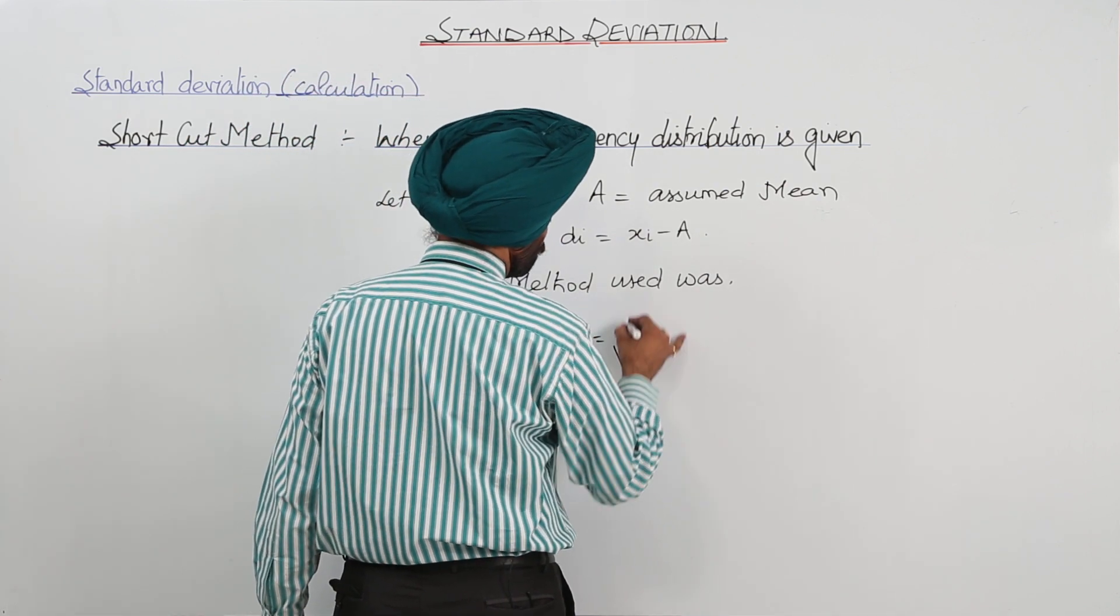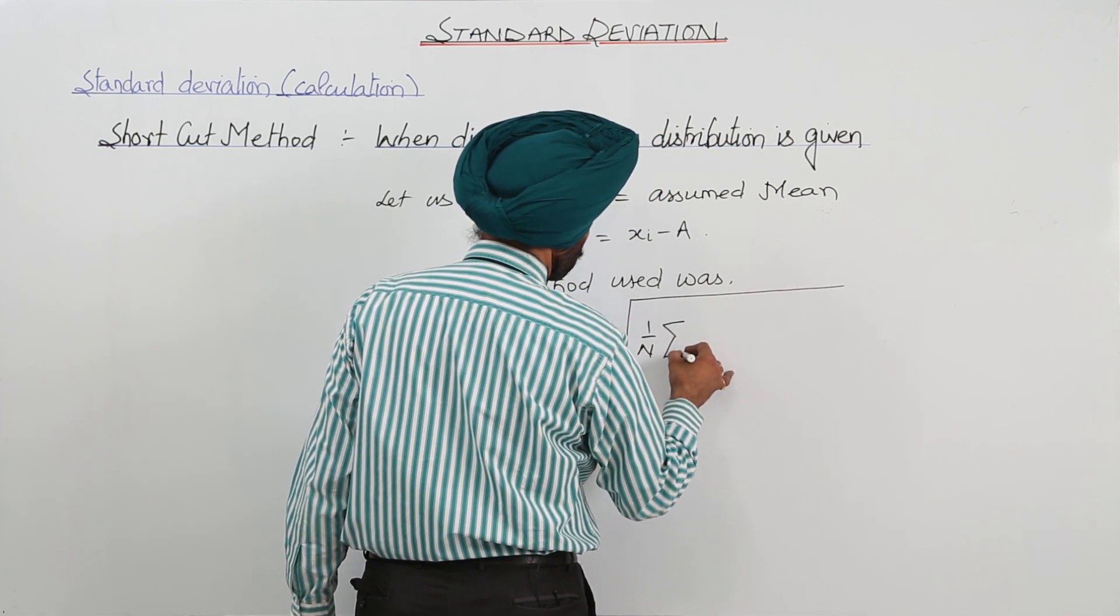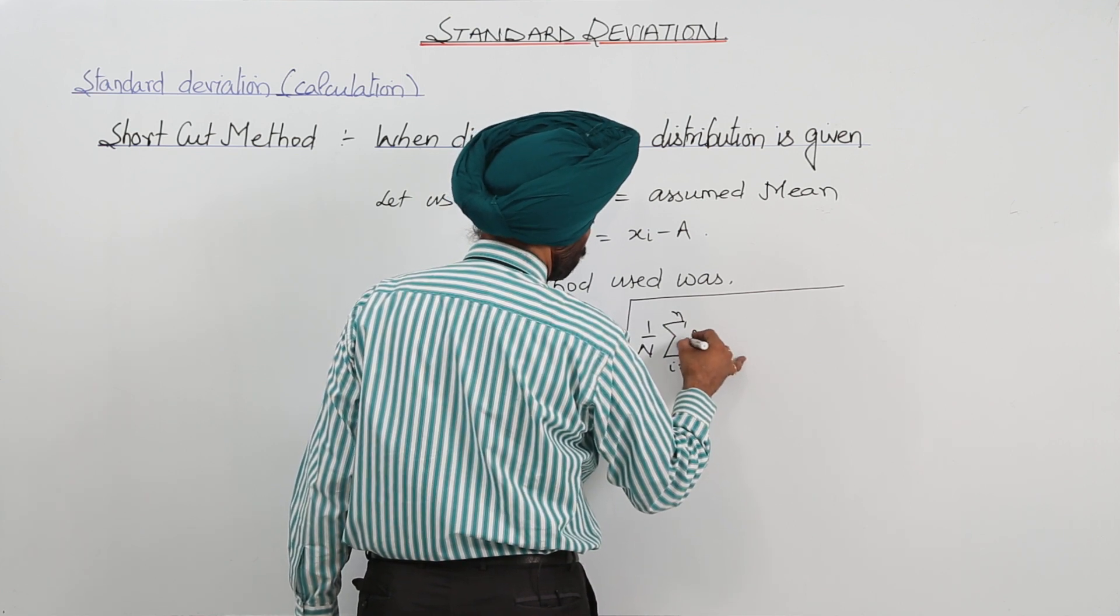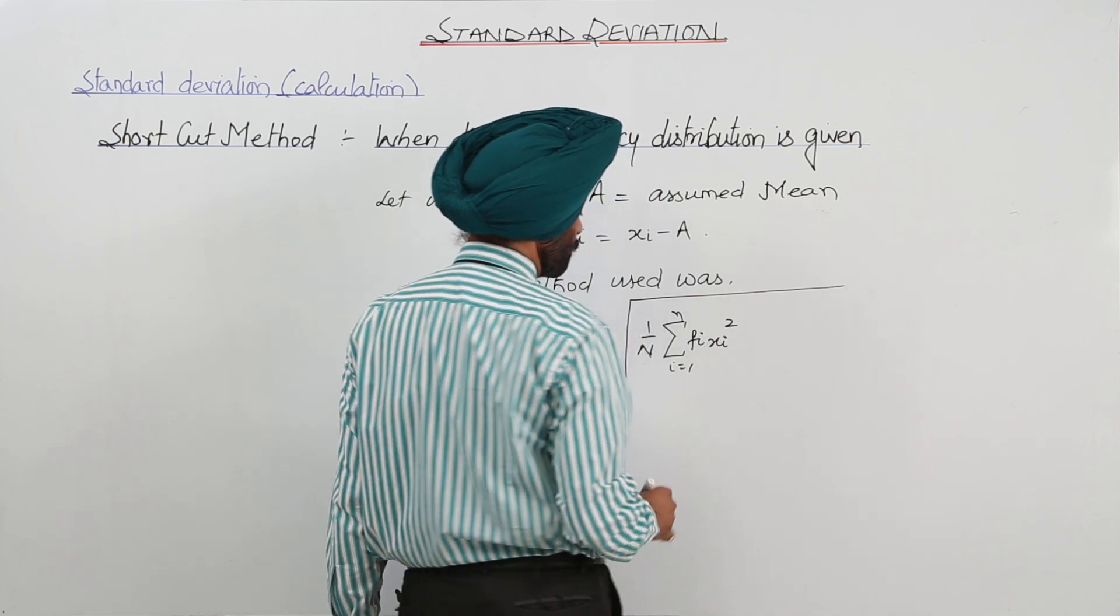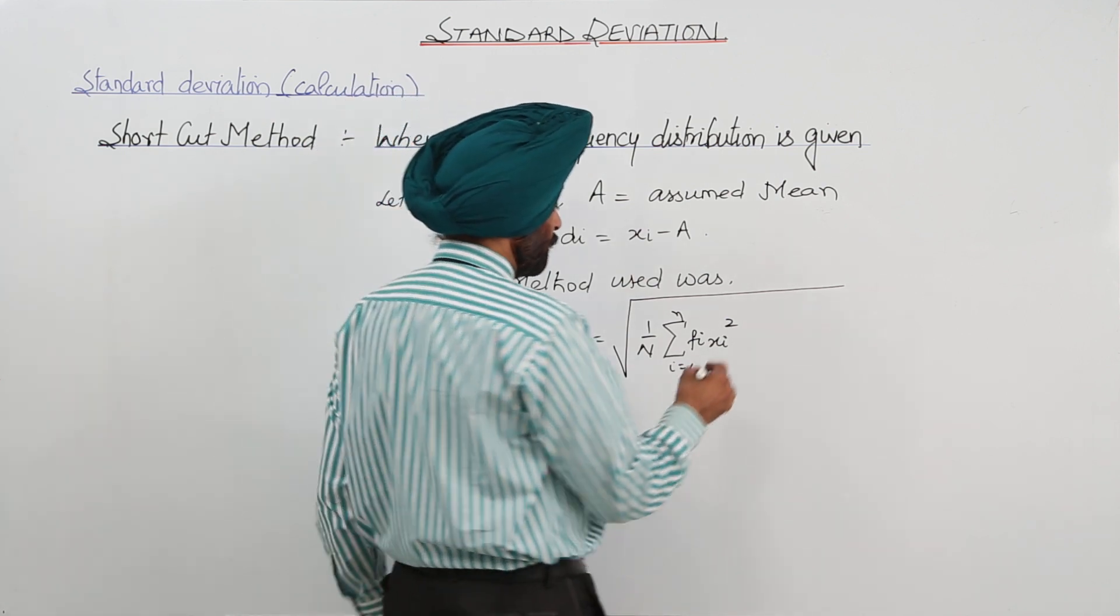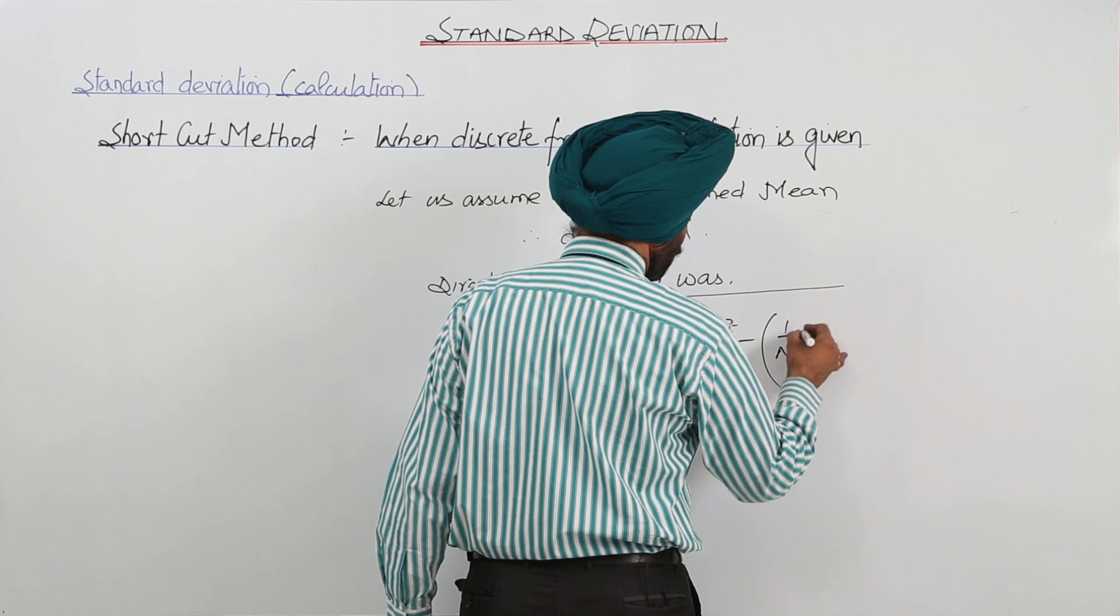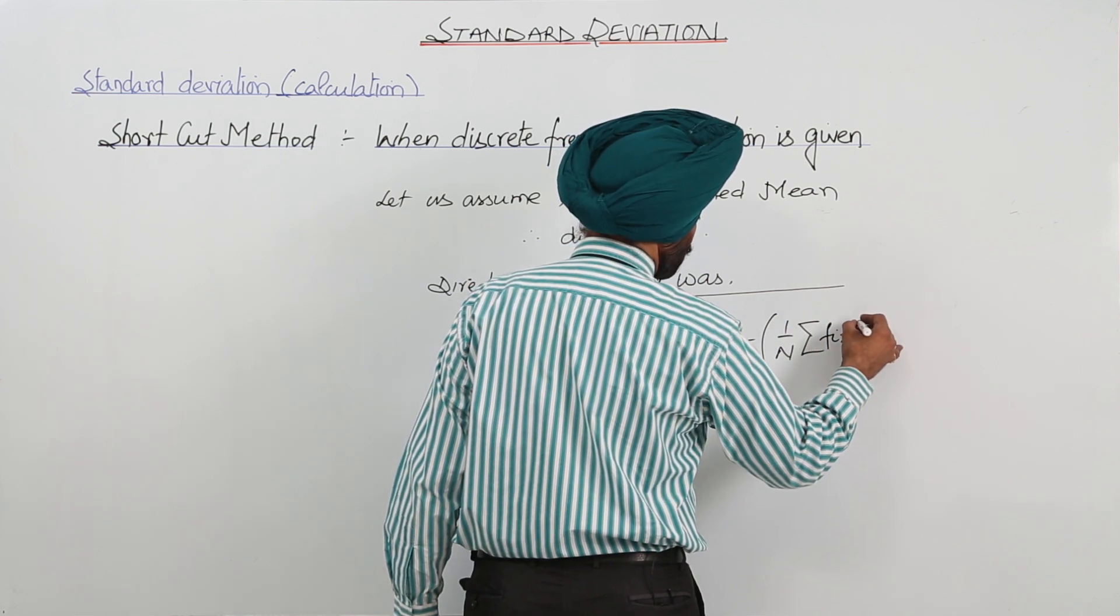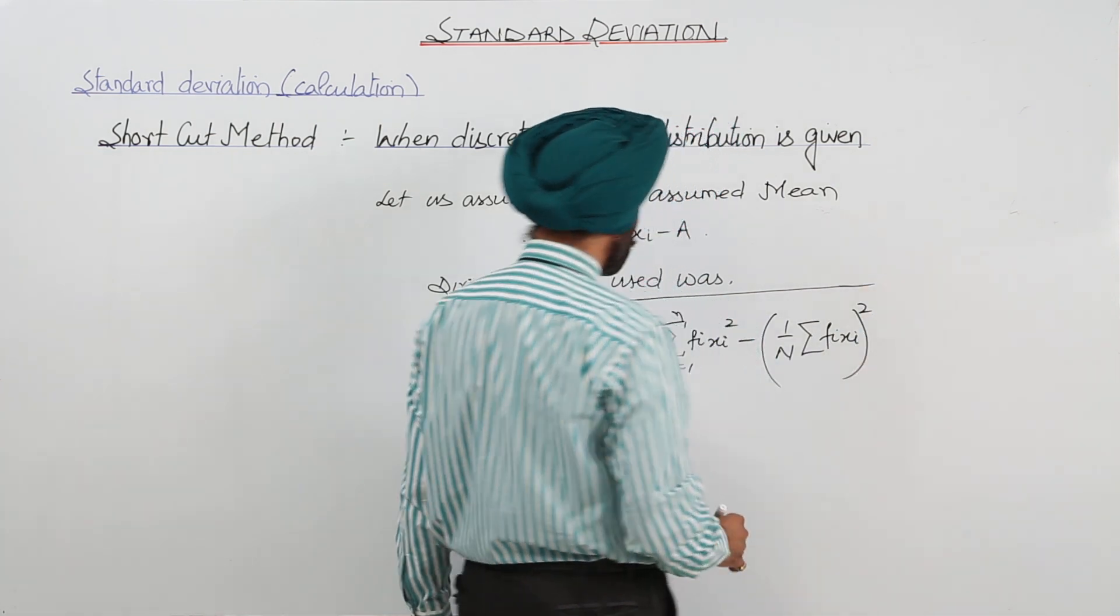It was square root for 1 upon N, submission for FI and XI square. Remember, it is not whole square, only square of XI. Then subtracting from this, 1 upon N, submission for FI XI whole square. This was the direct method.